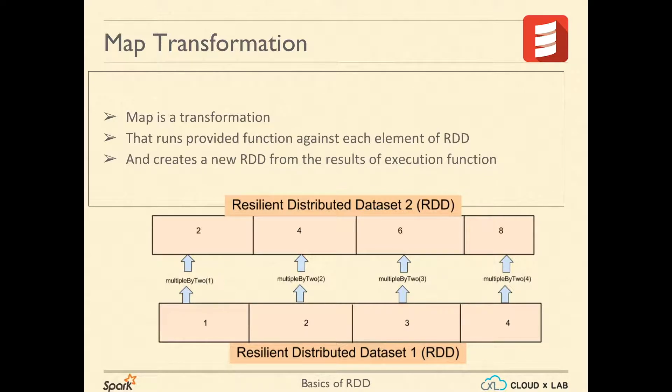The diagram shows that RDD 1 is being transformed into RDD 2 by running a function multiply by 2 against each element of RDD 1. This is achieved by map.